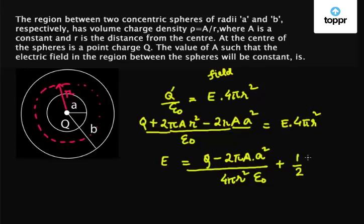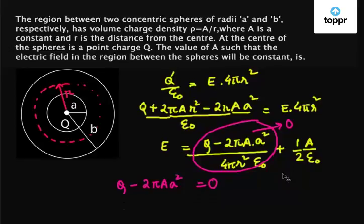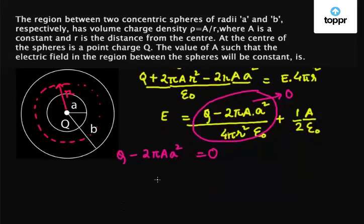Now it's given in the question that electric field is constant, so it's independent of R. So this term has to be zero because this term is dependent on R. So we have Q minus 2 pi A a squared equals zero. So A equals Q upon 2 pi small a squared. So the value of A comes out to be Q upon 2 pi a squared.